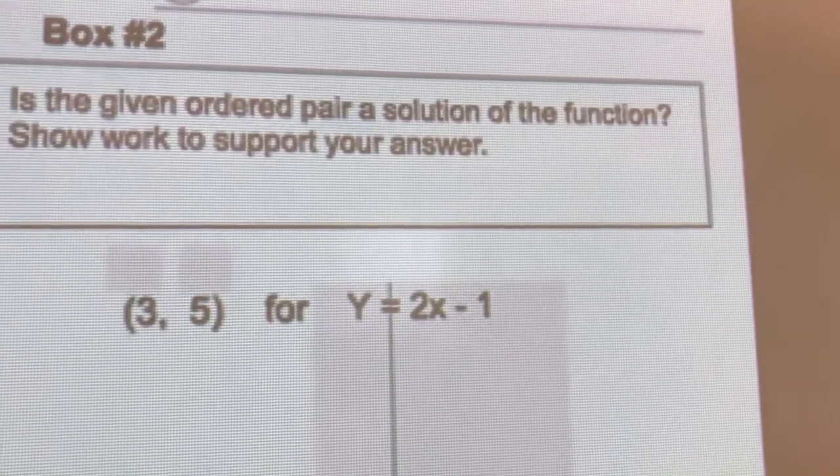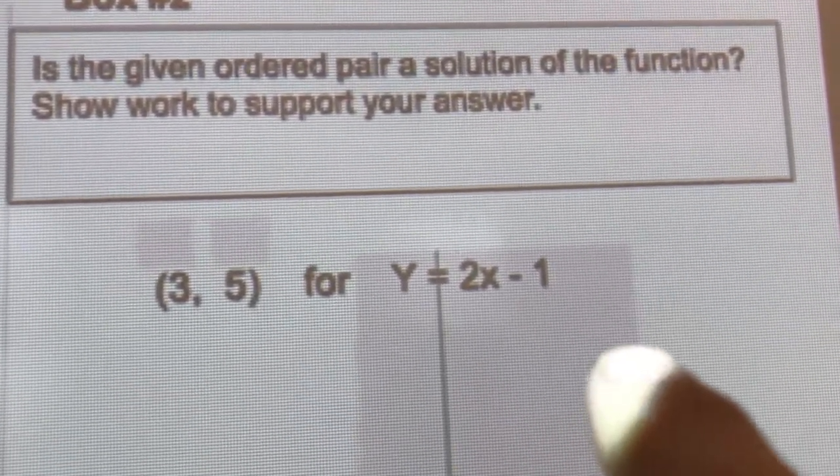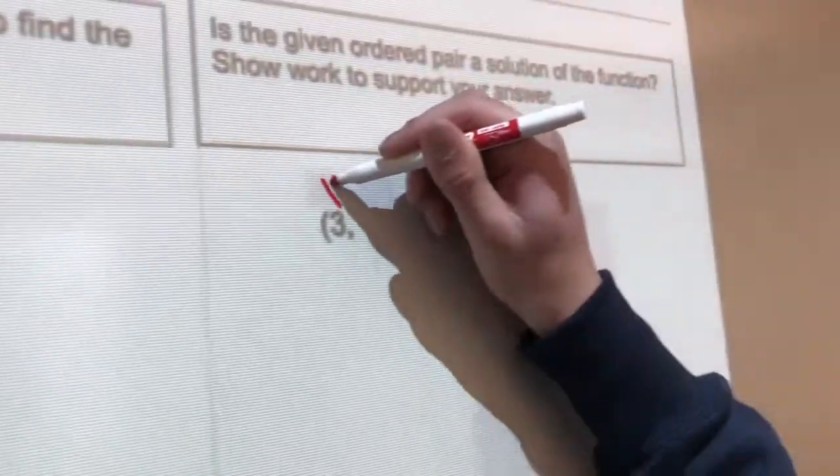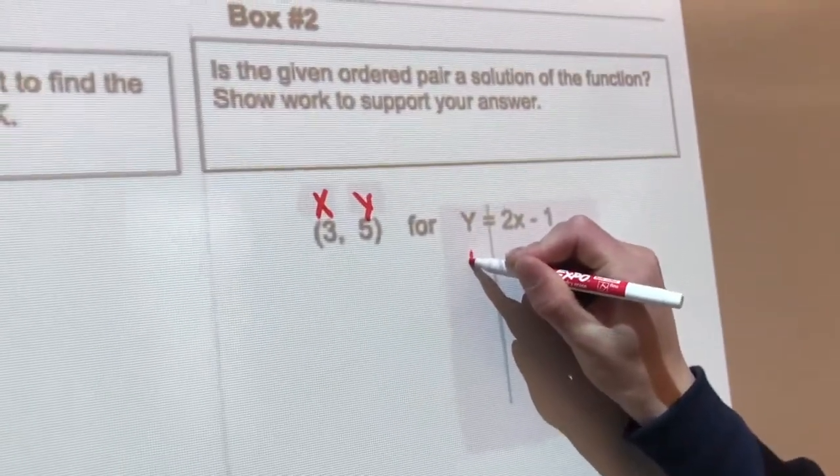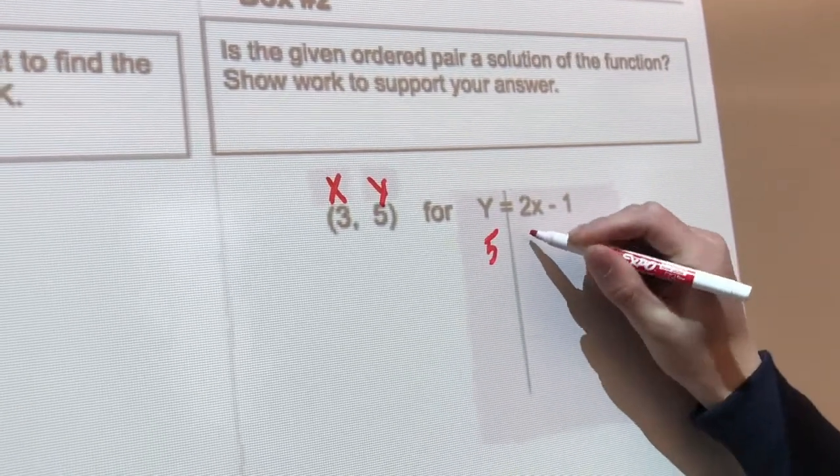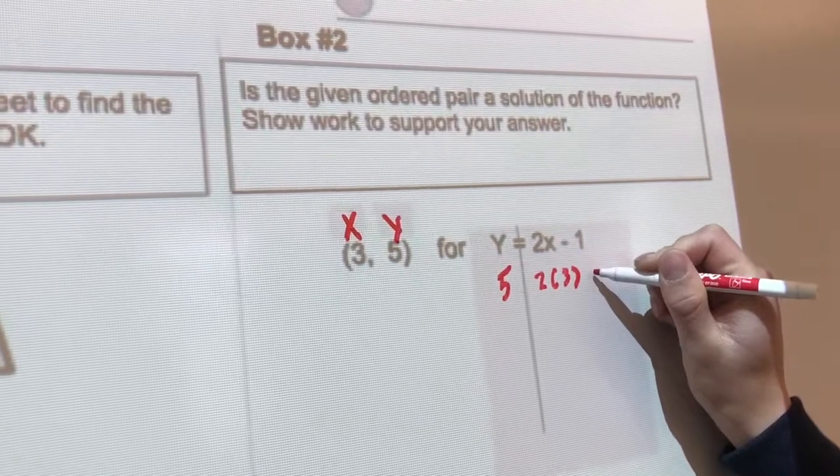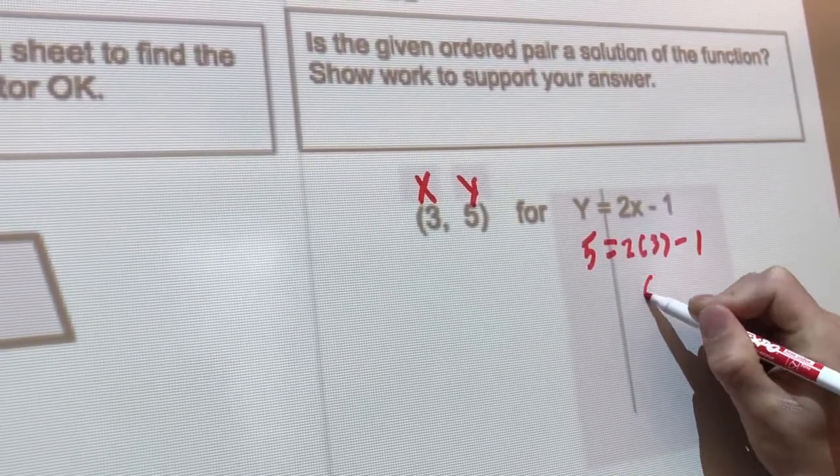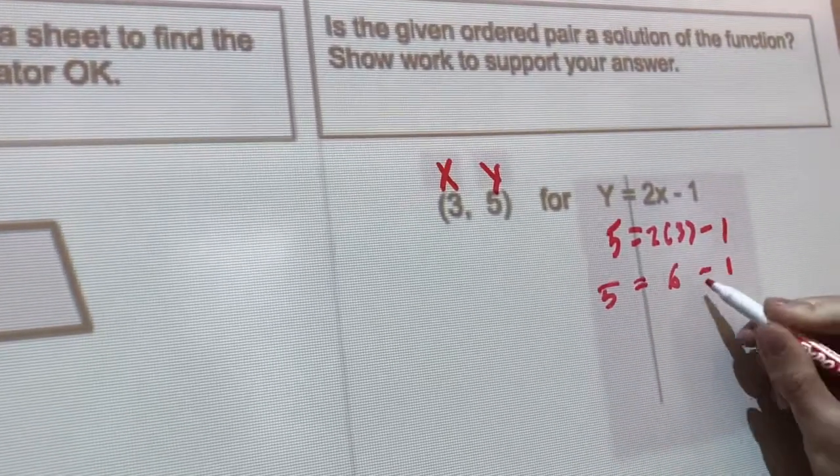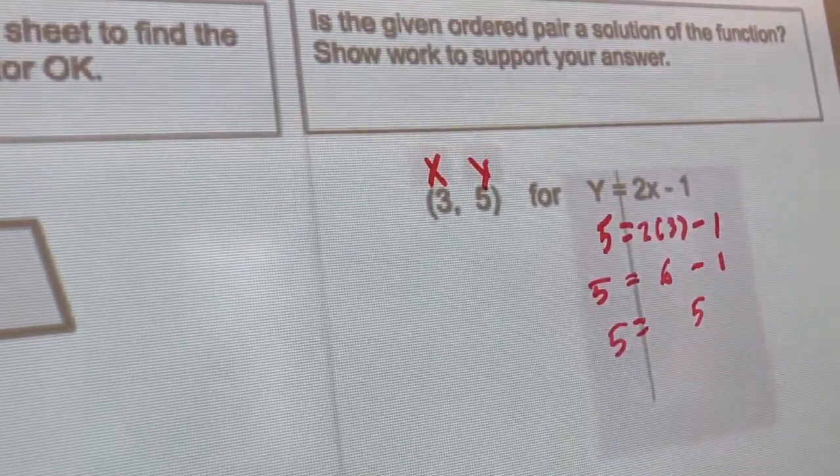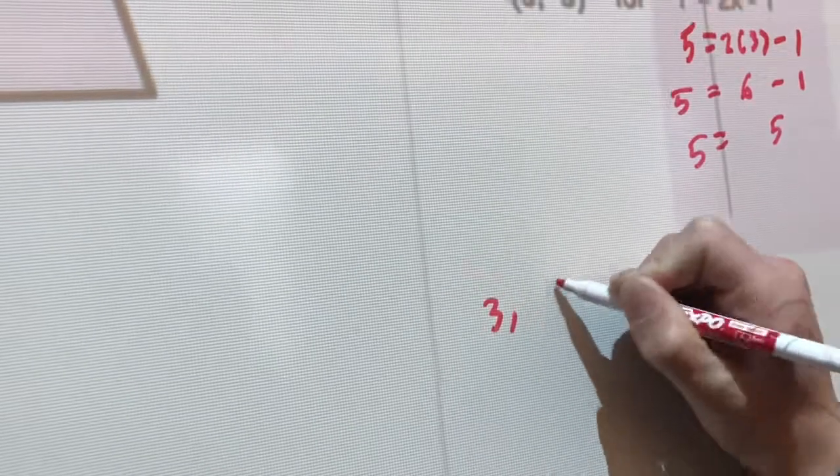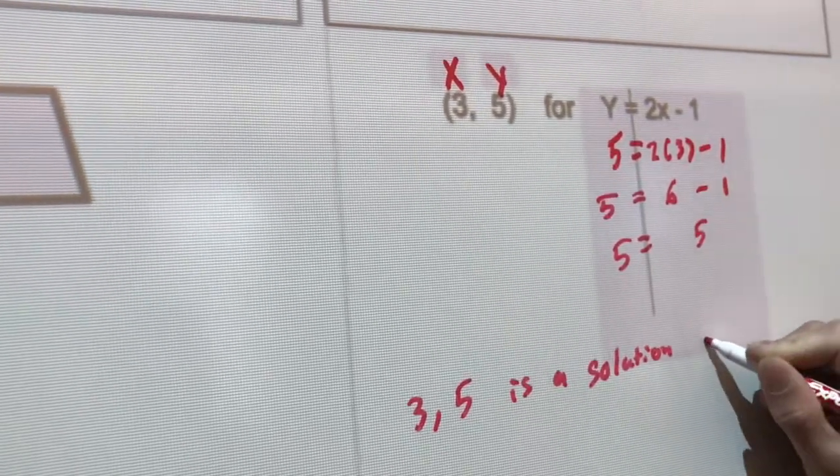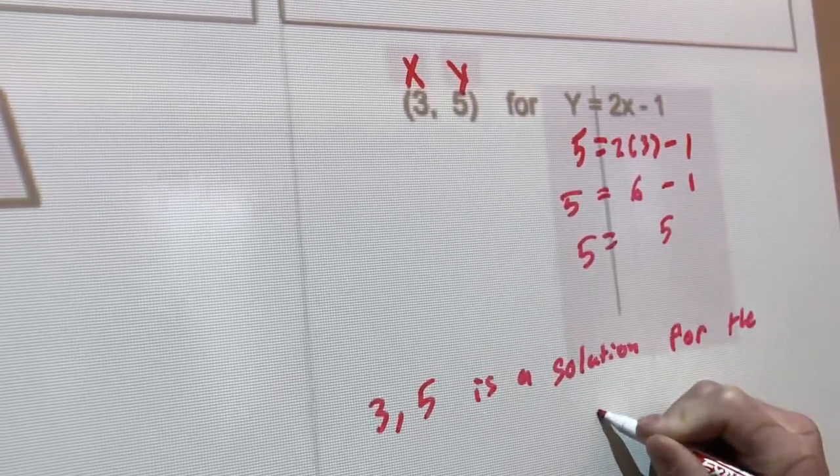Okay, Matt. You're going to look at that point (3, 5) and tell me whether or not it's a solution to this equation, y equals 2x minus 1. All right? Go ahead. So this is the x. This is the y. Nice. So what are you going to do with the x and the y there? Substitute. Good. So this is 5, and then 2, parenthesis 3 for x. What goes on that line? Oh, equals. Minus 1. And then 2 times 3 is 6 minus 1 equals 5. And then 6 minus 1 is 5. So 5 equals 5. So what can you say? (3, 5) is a solution for the equation. Nice. Good job.